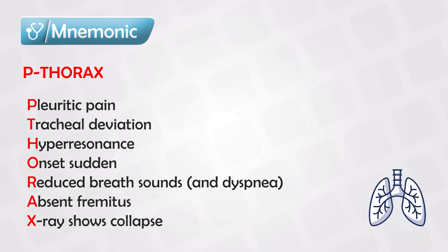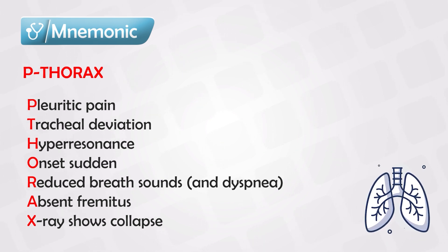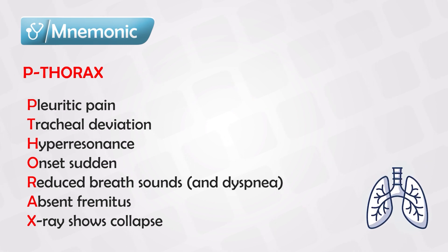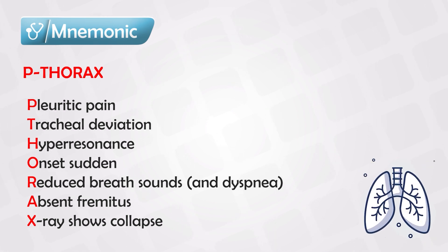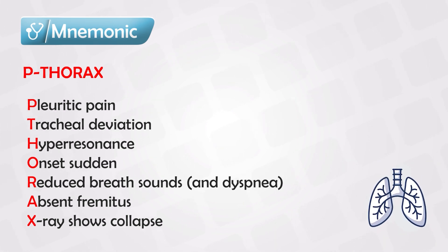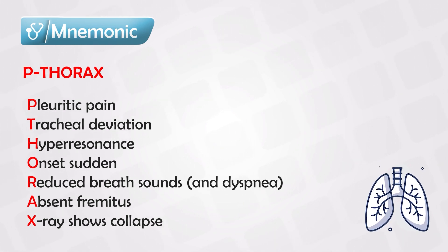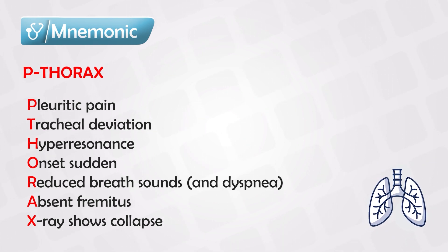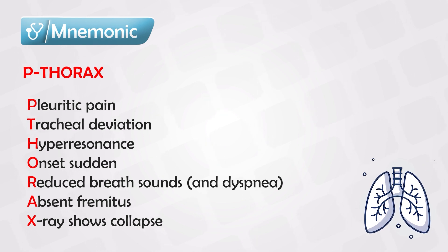Hyper-resonance is present because there is more air in the pleural cavity. The onset is often sudden. There is decreased breath sound on one side. Absent fremitus is also noted. And the x-ray shows collapse of the contralateral lung.